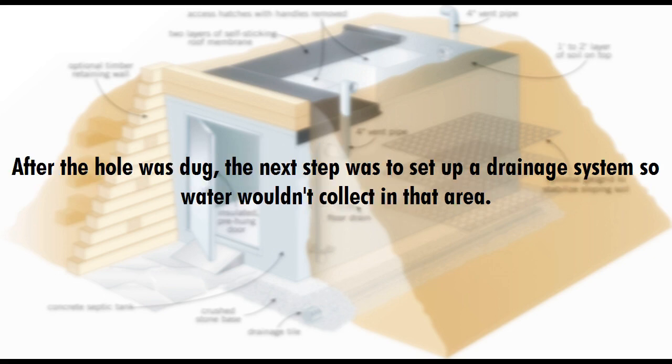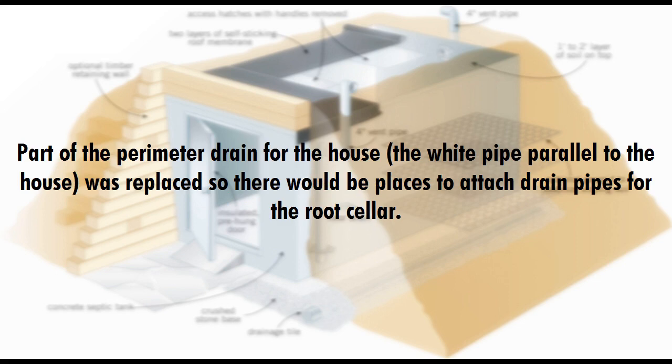After the hole was dug, the next step was to set up a drainage system so water wouldn't collect in that area. Part of the perimeter drain for the house, the white pipe parallel to the house, was replaced so there would be places to attach drain pipes for the root cellar.